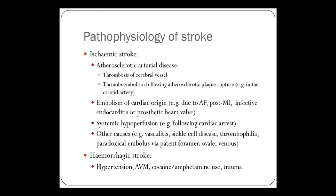Atherosclerotic arterial disease — we went through this in length last week. It's so important. The majority of disease burden, if you exclude infective causes, is down to atherosclerosis, whether it be heart, brain, or the limbs. So this can either be thrombosis or embolism, as we discussed last week.